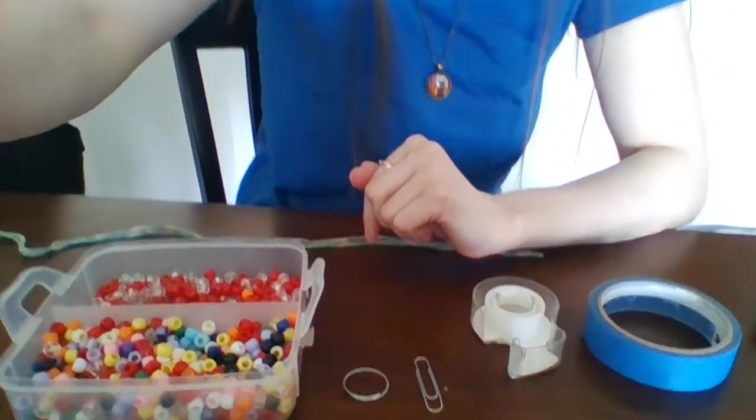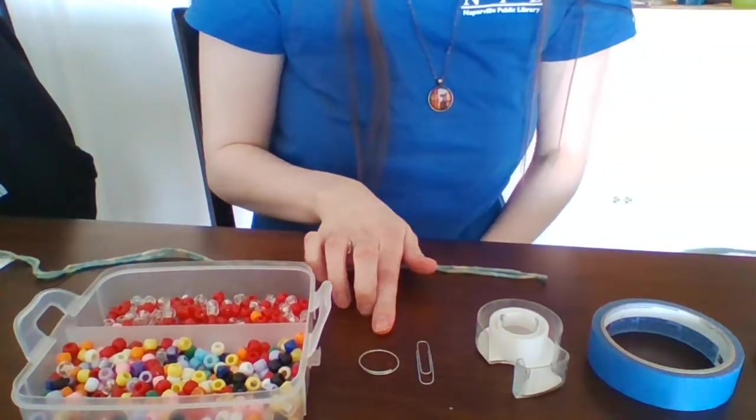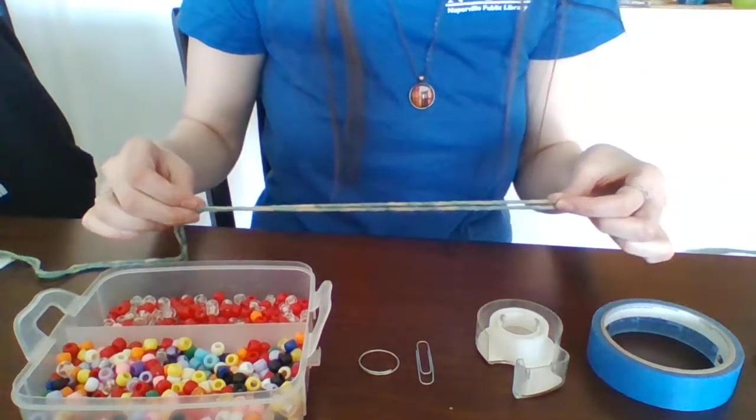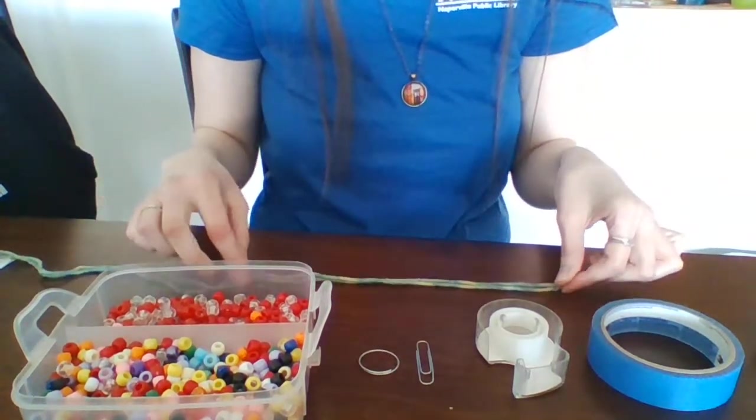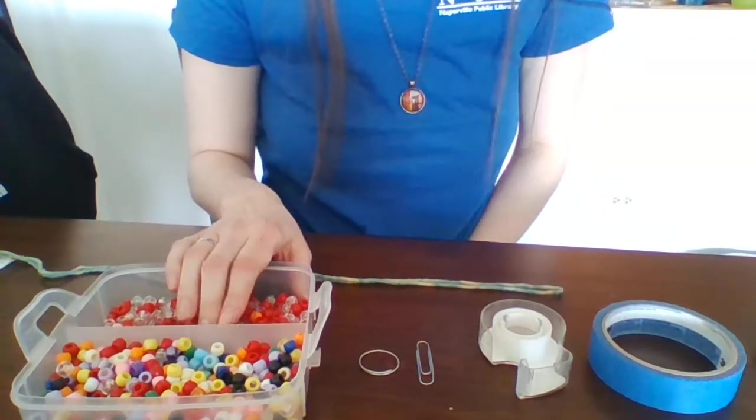I'm gonna go ahead and tilt my computer down so you can see the supplies we're working with. You're going to start by needing either a paperclip or a keyring, three to four feet of yarn or some type of string, tape either clear or masking, and 50 pony beads.